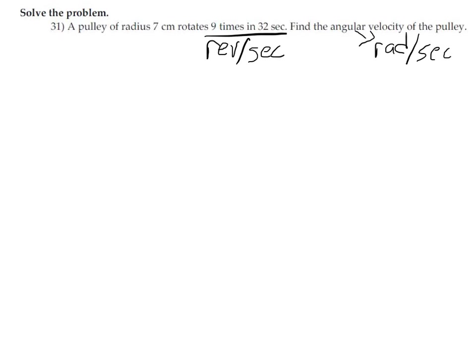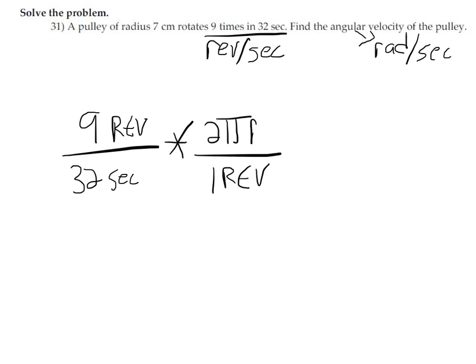This problem is converting from revolutions per second to radians per second. This is not a linear distance problem. The fact that the pulley has radius 7 centimeters doesn't actually play into this problem, because converting 9 revolutions in 32 seconds is no more than knowing one revolution is 2π radians.